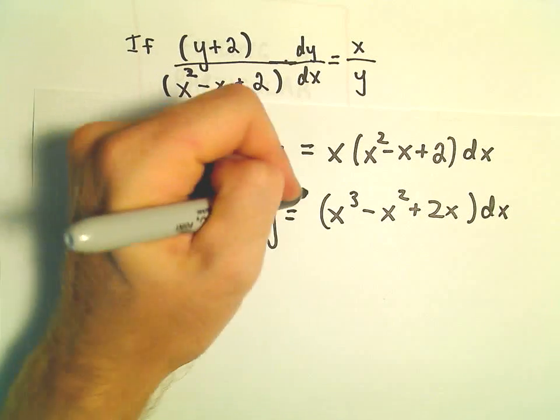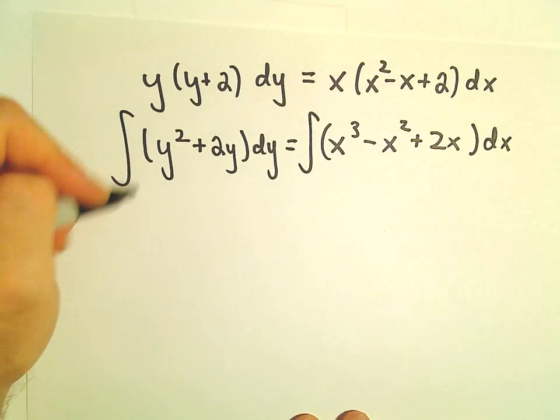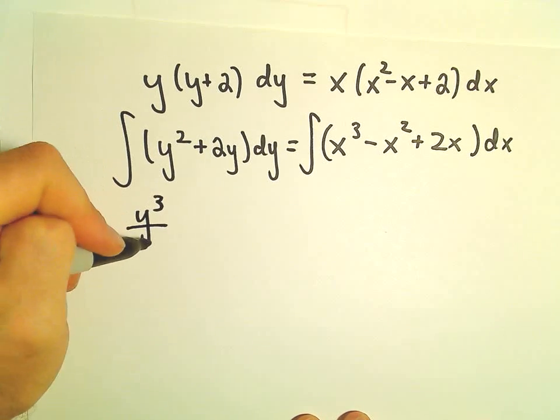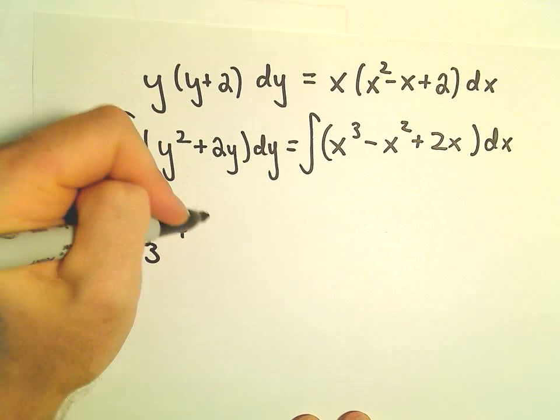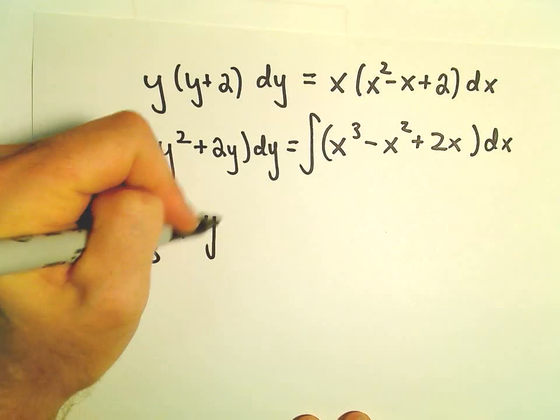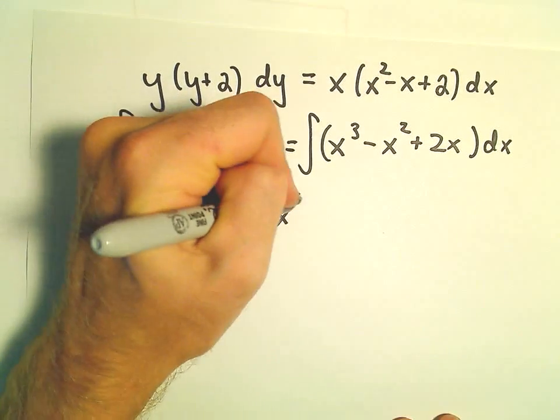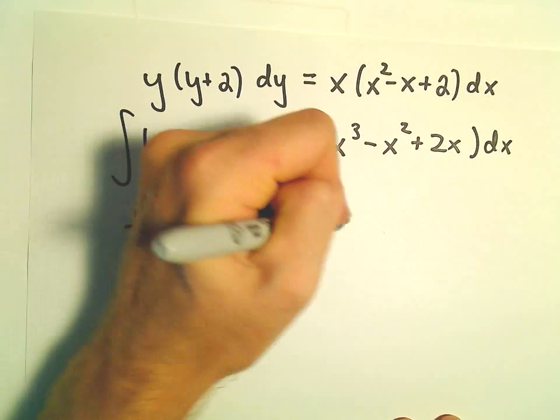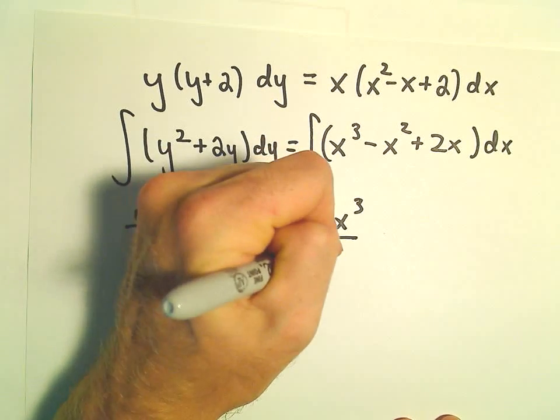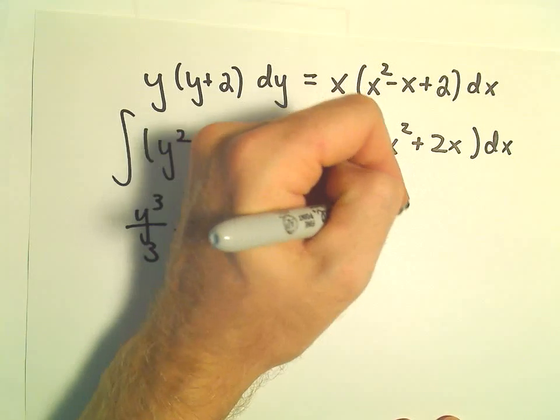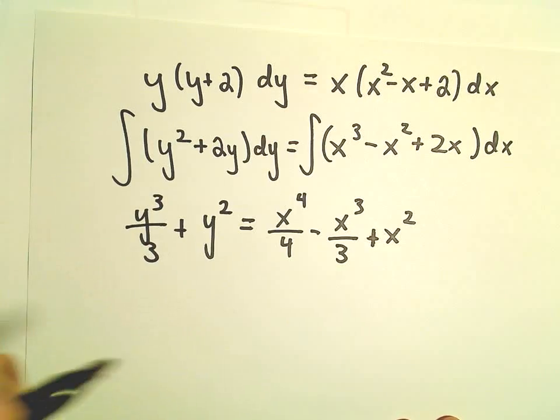Now, we'll just integrate. So, on the left side, we'll have y³/3. We'll have 2y²/2, which will leave us with y². On the right, we'll have x⁴/4 minus x³/3 plus 2x²/2, or just x².